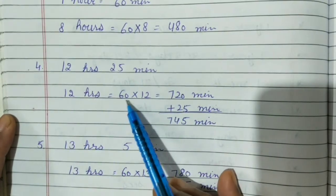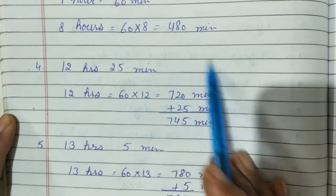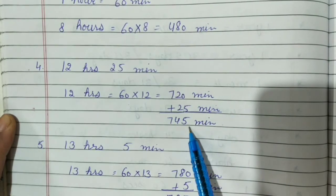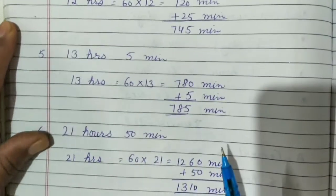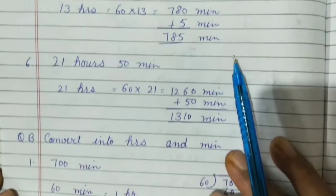First you will convert only hours into minutes. 12 hours equals 60 multiply by 12, 720 plus 25, 745 minutes. Same way you can do question number 8.